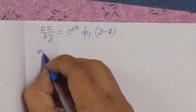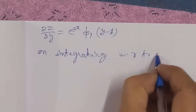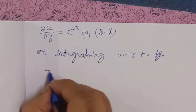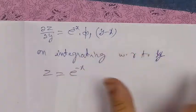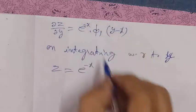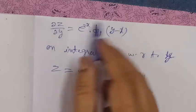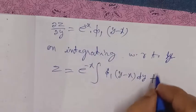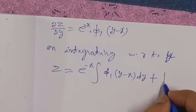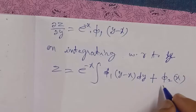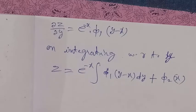On integrating with respect to y, we get z equals the integral. When integrating with respect to y, x is constant, so e to the power minus x is constant. The integral of the function gives us phi2 of x, another arbitrary function.